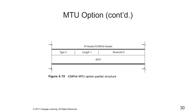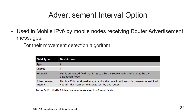There are three more option types. The advertisement interval option, if included, is used for mobile IPv6 by mobile nodes receiving router advertisement messages for their movement detection algorithm, as described in RFC 6275. The advertisement interval option format fields and packet structure are shown here.